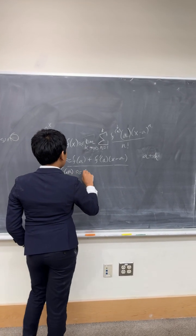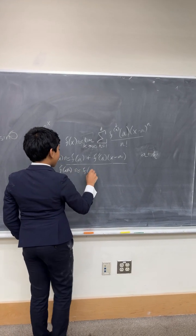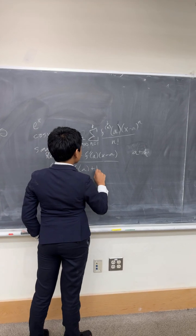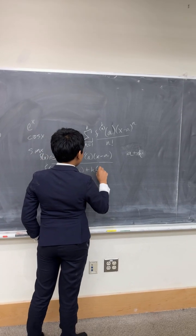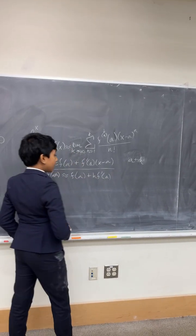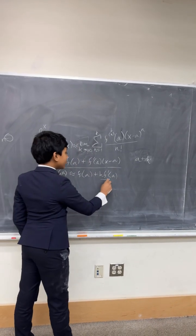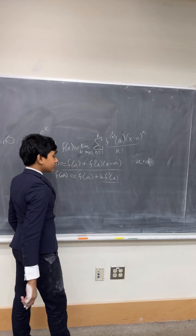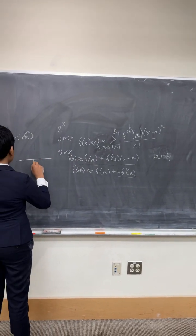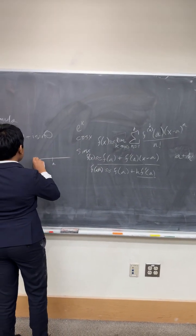Now, of course, this doesn't cut it, because we're not looking at lines — we're looking at curvy things. Otherwise, we wouldn't be using Taylor approximations. So, we can move on to the second order.